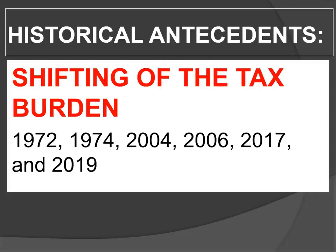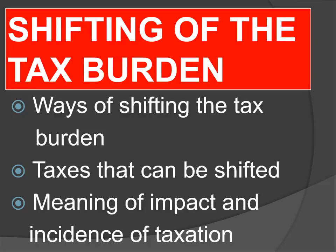Mark this as a three-star because of the frequency in which this topic was examined. If you were reviewing for the 2019 bar, you would have noted that the last time this was asked was 2017, making it dangerous for the 2019 bar. For any bar you're going to take next year or the year after, this is a dangerous area you must master very well. There are different ways of shifting the tax burden: either the taxes are directly stated on the invoice as part of the selling price, or shown separately. These are the only taxes — indirect taxes — that can be shifted.